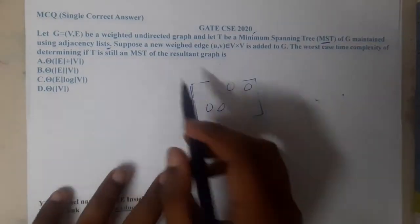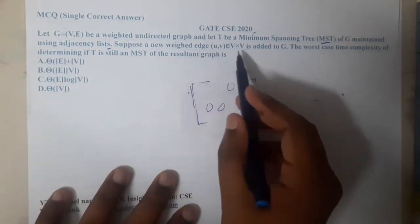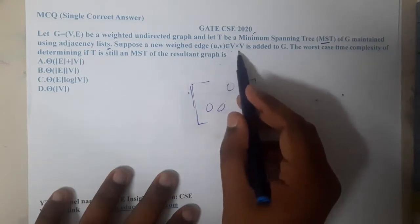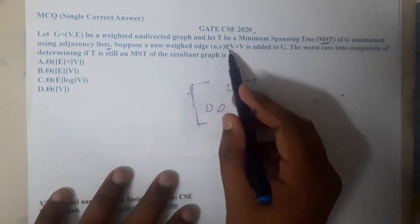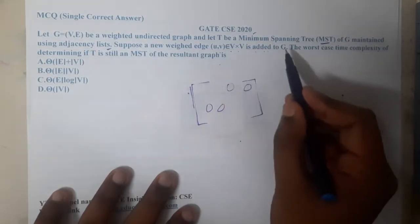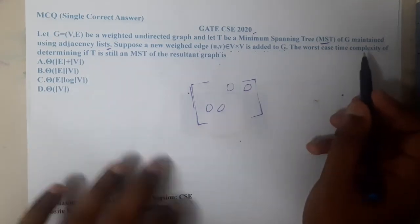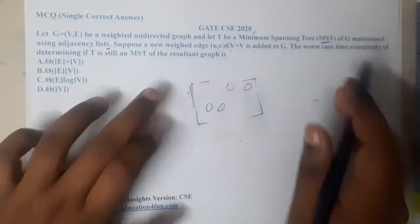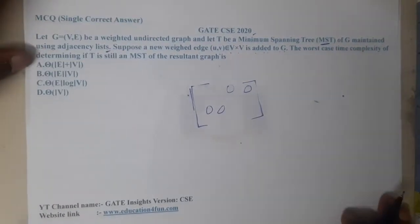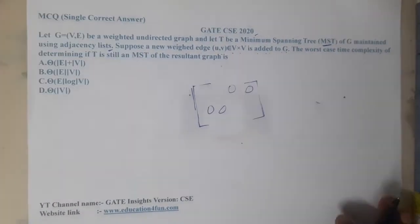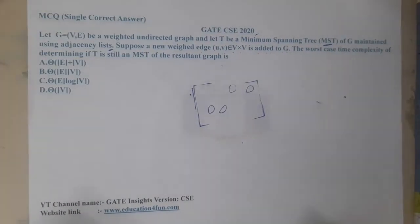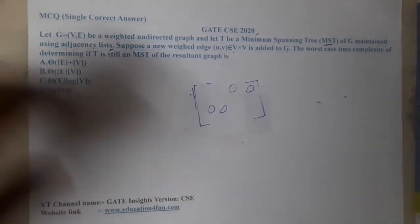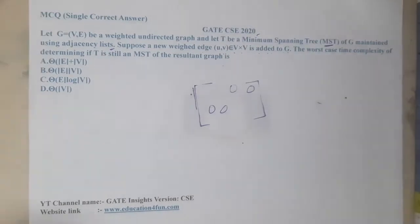Suppose a new weighted edge (u, v), where u, v belong to V, is added to G. The question asks: what is the worst-case time complexity of determining if T is still an MST or not?